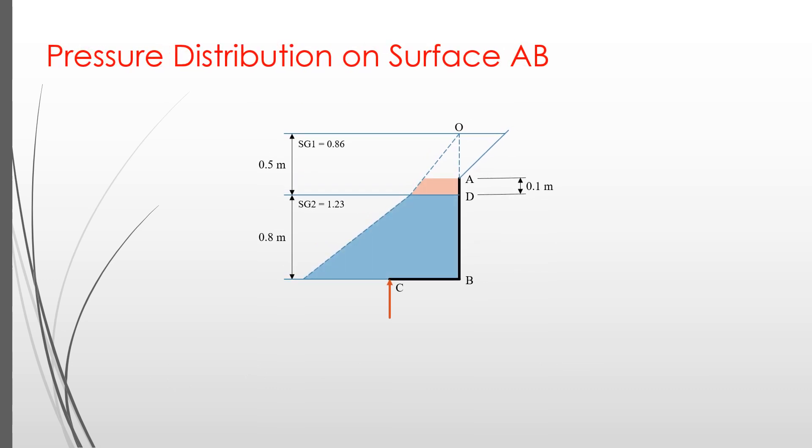To solve this problem, let's start by measuring the force due to water pressure on the gate. The gate receives pressure from two layers of fluids, a fluid with a specific gravity of 0.86 acts on the vertical surface AD, and a fluid with a specific gravity of 1.23 acts on the vertical surface DB and horizontal surface BC.